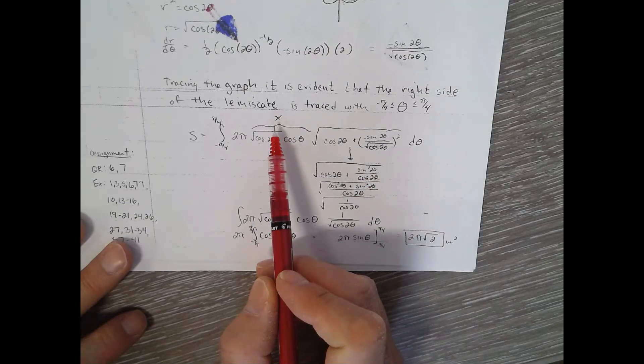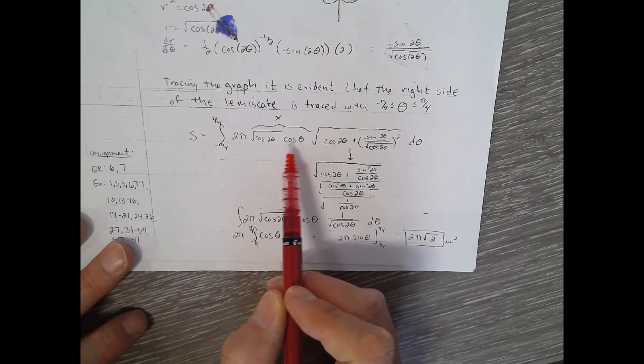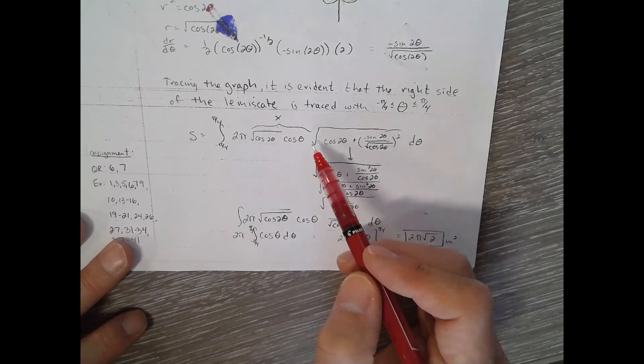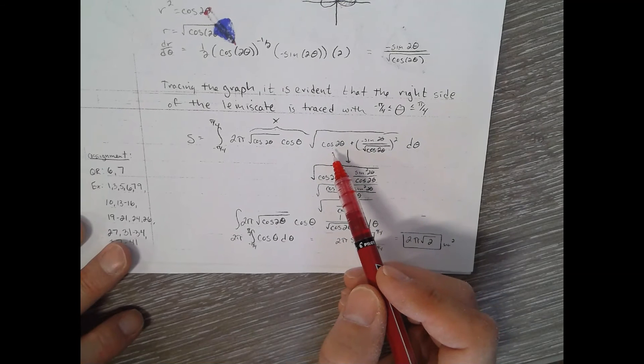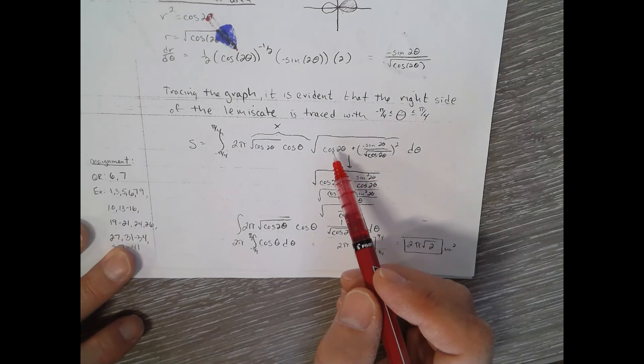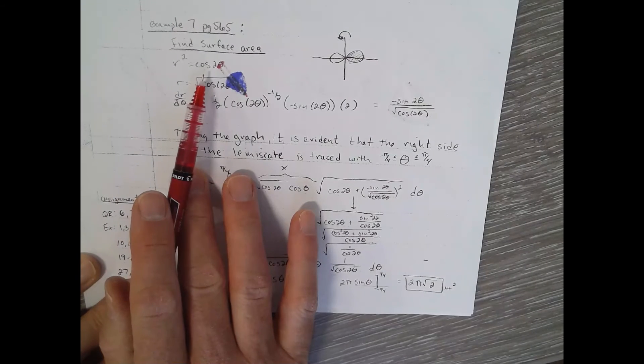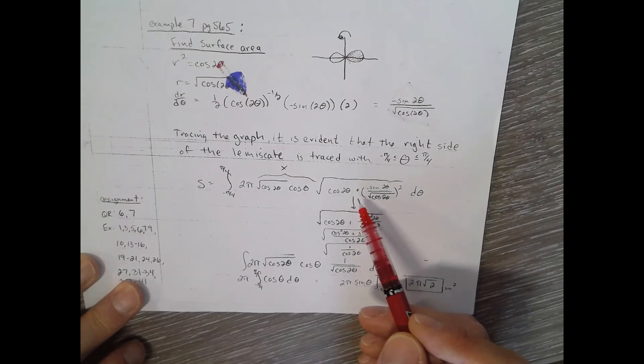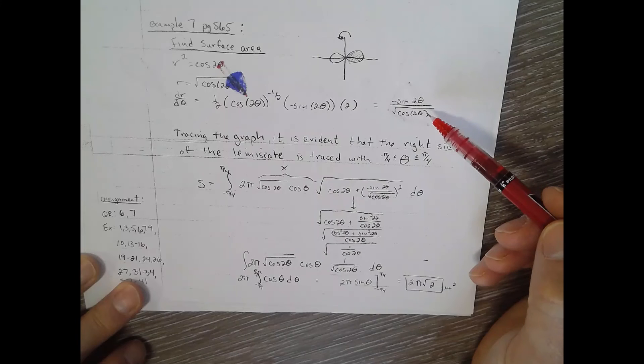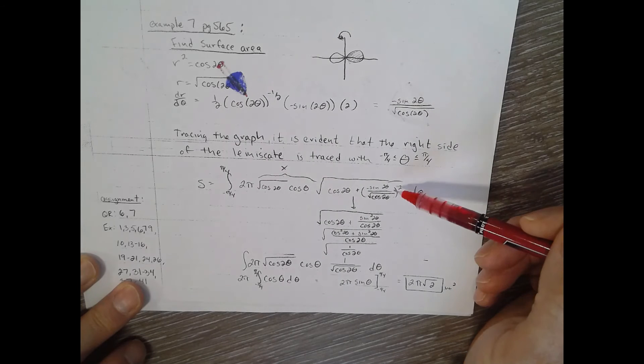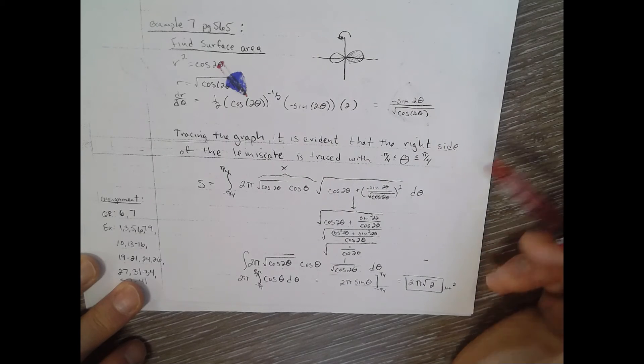So now plug it in. x is r, which is this, cosine theta, square root of r squared. Well, it's actually helpful that r squared is already given to us, it's cosine two theta, plus the derivative which we found right here, squared, and all that d theta.